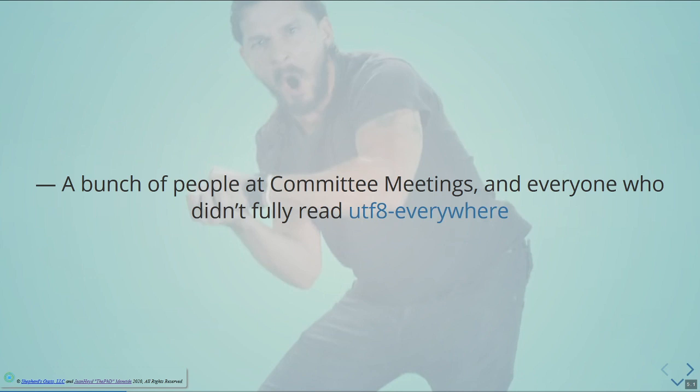People at committee meetings, and everybody who hasn't fully read UTF-8 Everywhere, always come to me asking why char isn't UTF-8. The sign of char is completely implementation defined — it could be signed or unsigned. If you pass the right compiler flag and get unsigned char, you can use UTF-8 and all the math is correct with no bad overflow or underflow, and it does exactly what you want. So why don't we just do that?